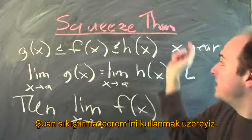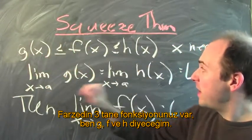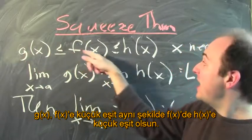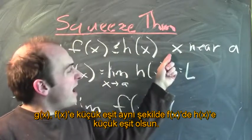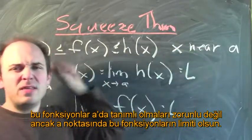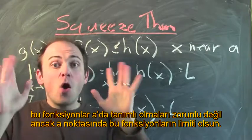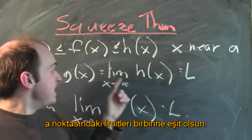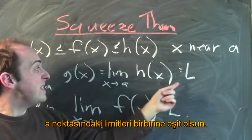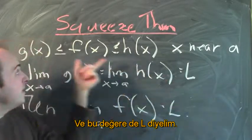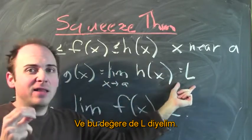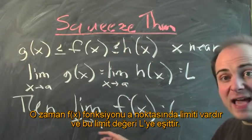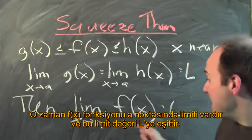Here's what we're going to use: the squeeze theorem. Suppose you've got three functions — g, f, and h — where g of x is less than or equal to f of x, and f of x is less than or equal to h of x, for values of x near a, though maybe these inequalities don't hold at the point a itself. Also suppose that the limit of g of x as x approaches a equals the limit of h of x as x approaches a, both equal to some value l. Then you get to conclude that the limit of f of x as x approaches a exists and equals l.